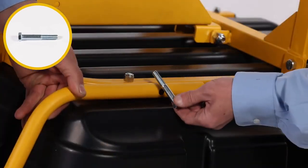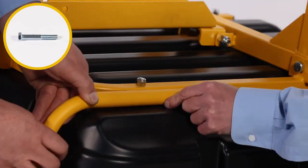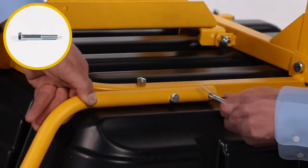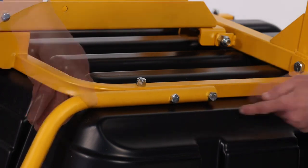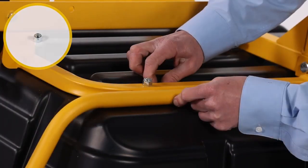Next, align each handle assembly, Part 8, and secure it with 2 3/8 by 2 1/2 inch bolts, Part D, and 2 3/8 inch Nylok hex nuts, Part M.